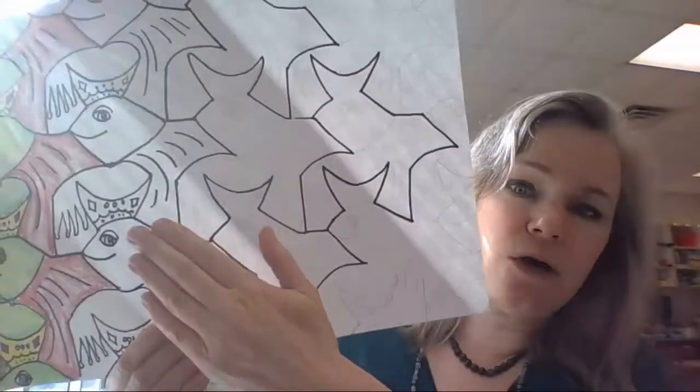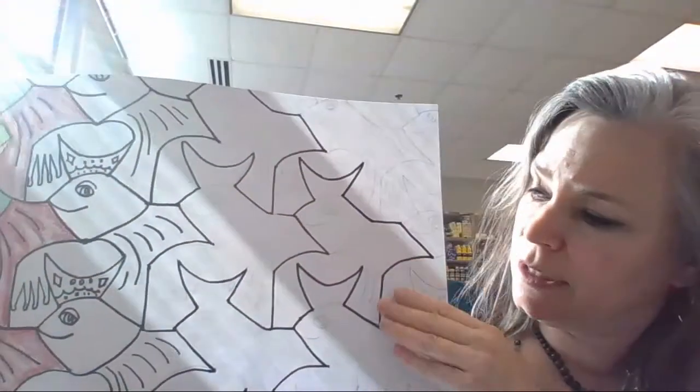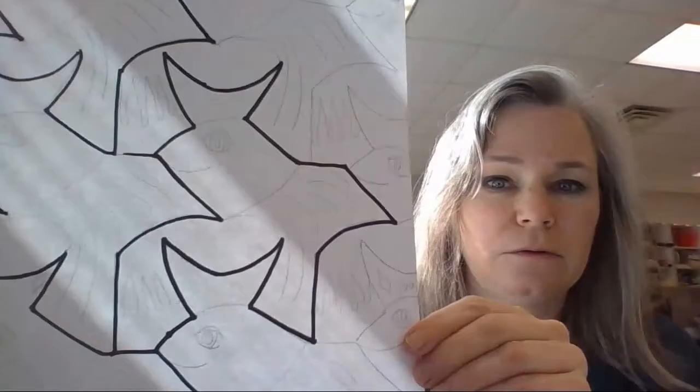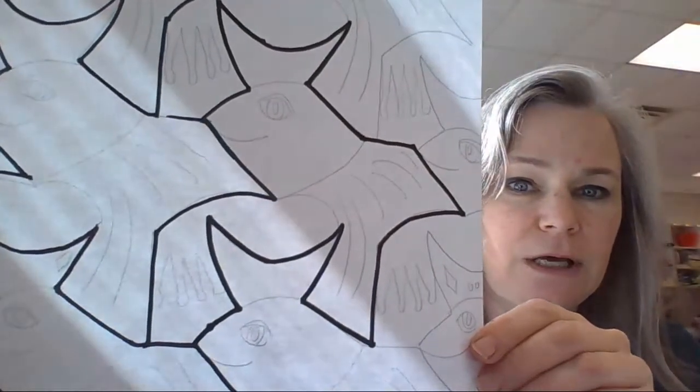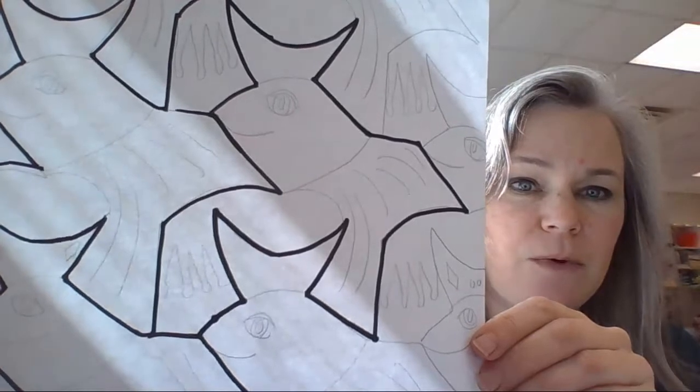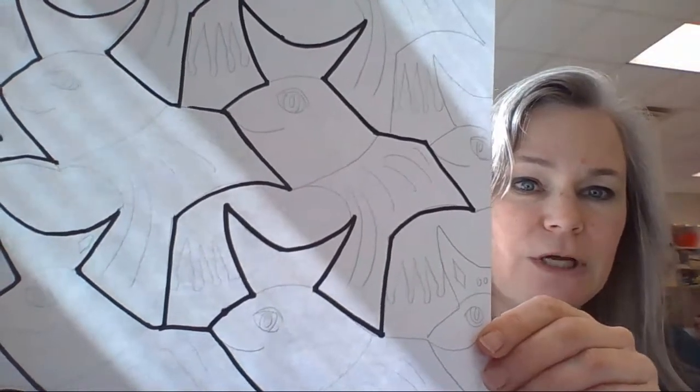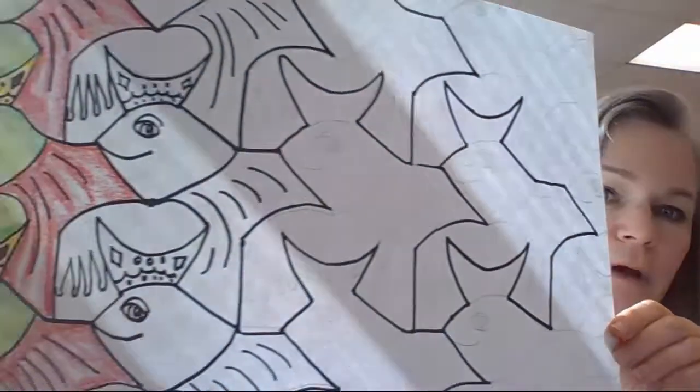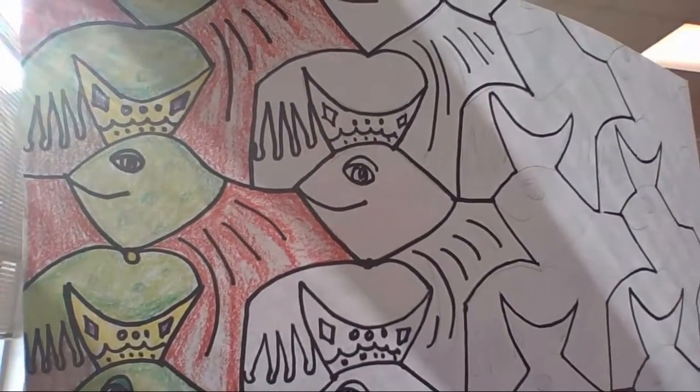So you're going to start by just tracing it with pencil, penciling it in like you see there. So you trace the shape and then put the design inside the shape. And then eventually, you're going to color it in.